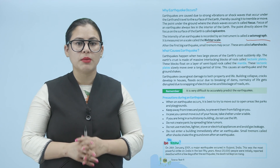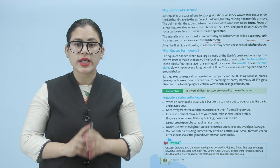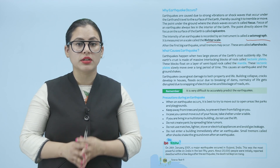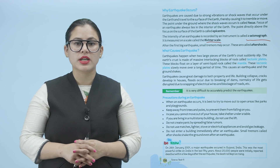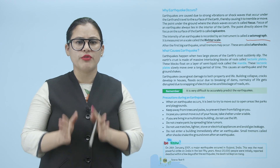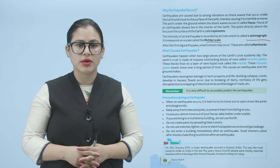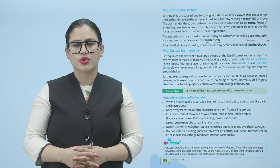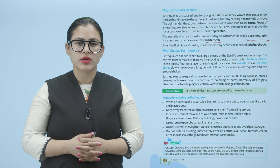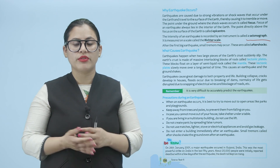On 26th January 2001, a major earthquake occurred in Gujarat, India. This was the most powerful strike on India in the last 50 years. About 20,000 people were initially reported dead, but within a few days after the earthquake the death toll kept on rising. India mein 26th January 2001 mein major earthquake aaya tha Gujarat mein, jis mein lagbhag 20,000 logon ki jaan gayi thi, aur uske baad kuch dinon ke baad ye number increase ho gayi thi.